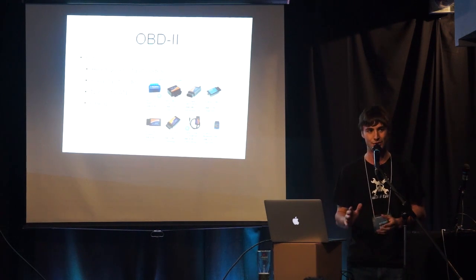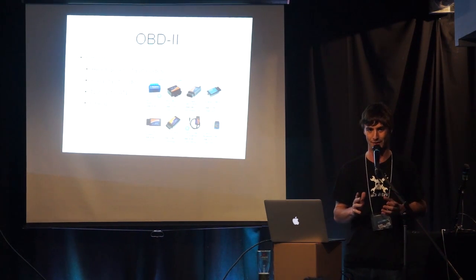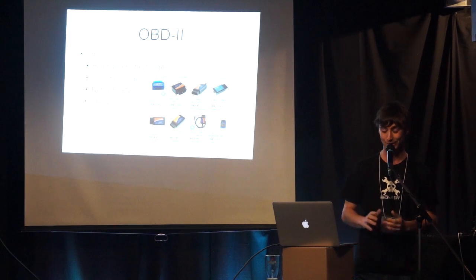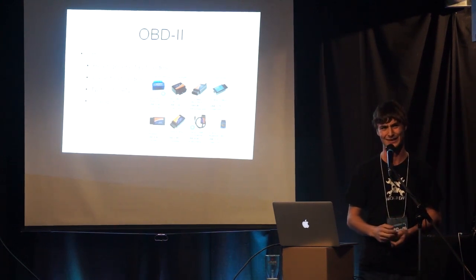On the diagnostic end, OBD2 is a good place to start if you just want to play with a car without ruining it. Thanks to the California Air Resources Board — they wanted to do smog tests and mandated every car sold in California have OBD, which became OBD2. This lets you read generic fault codes and clear them to turn off that annoying check engine light. OBD2 isn't just CAN — it supports other protocols for older vehicles too.